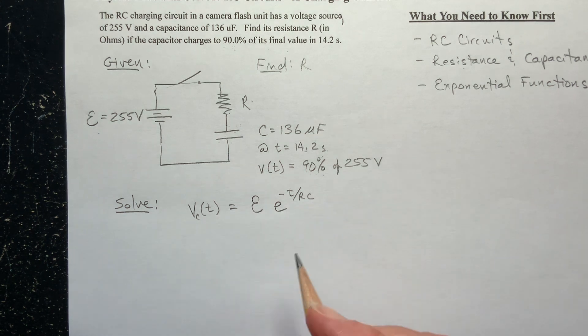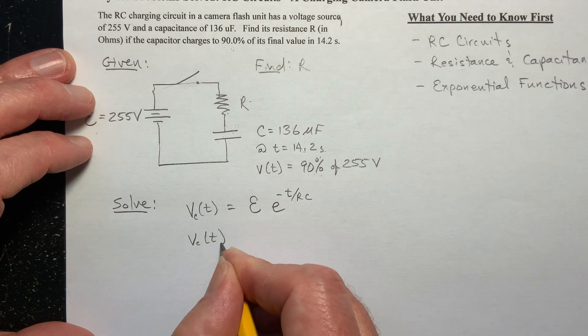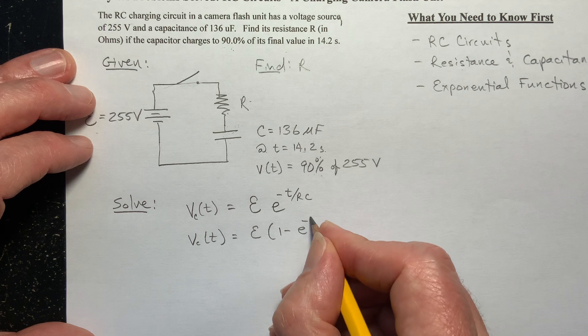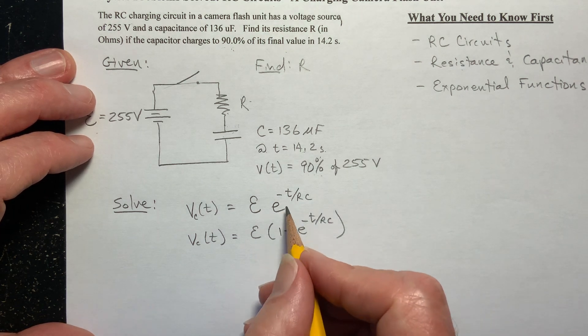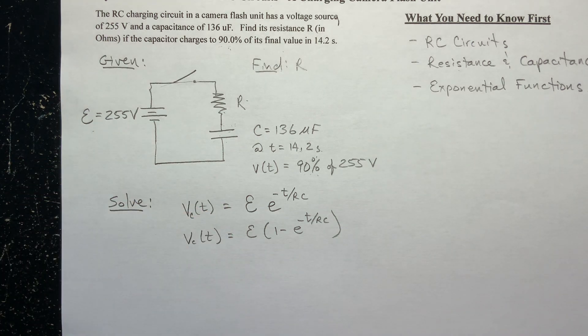But the other one could be this one. You can quite often see one minus E. So it's usually going to be this or it's going to be this.